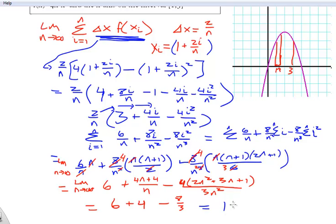Final answer looks to be pretty close here. 6 plus 4 is 10, and minus 8 thirds, that's 2 and 2 thirds. So this equals 7 and 1 third.